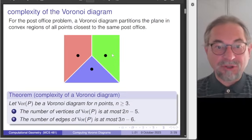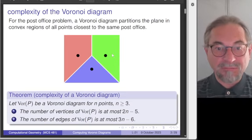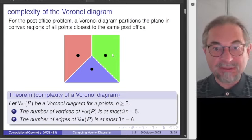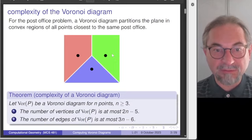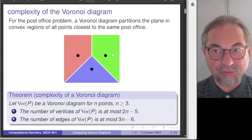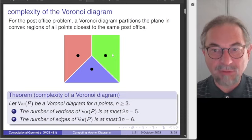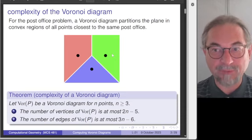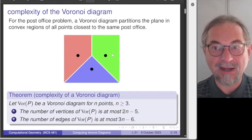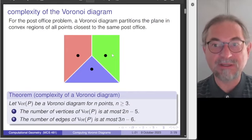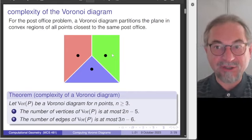A straightforward algorithm is to construct all the bisectors and then shorten them. A bisector splits the plane into equal halves. That algorithm is very good if you have to construct Voronoi diagrams by hand for a small number of sites. The main result on complexity is that an O(n log n) algorithm is possible, which we will prove in the next lecture.